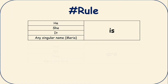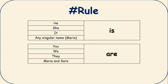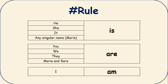Then you have 'are': you are, we are, they are, Maria and Sarah are. So whenever there are you, we, they, or plural names, you are going to use 'are' with them. And the last one is 'I' — I is always with 'am', so I am. For example: how are you? I am fine. What are you doing? I am teaching you.